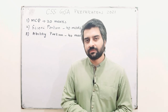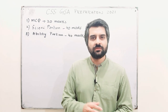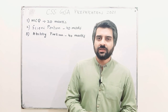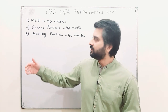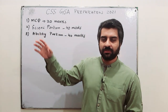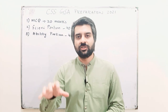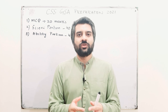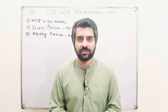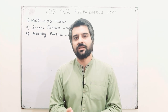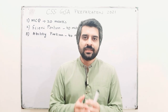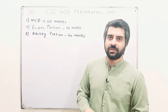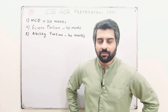In your subjective part you have been given two sections. Section 1 is from the science portion and it has 40 marks. Section 2 is General Ability, where you are dealing with maths, basics of maths, logical reasoning, and mental abilities. So we have these three sections in our General Science and Ability paper.